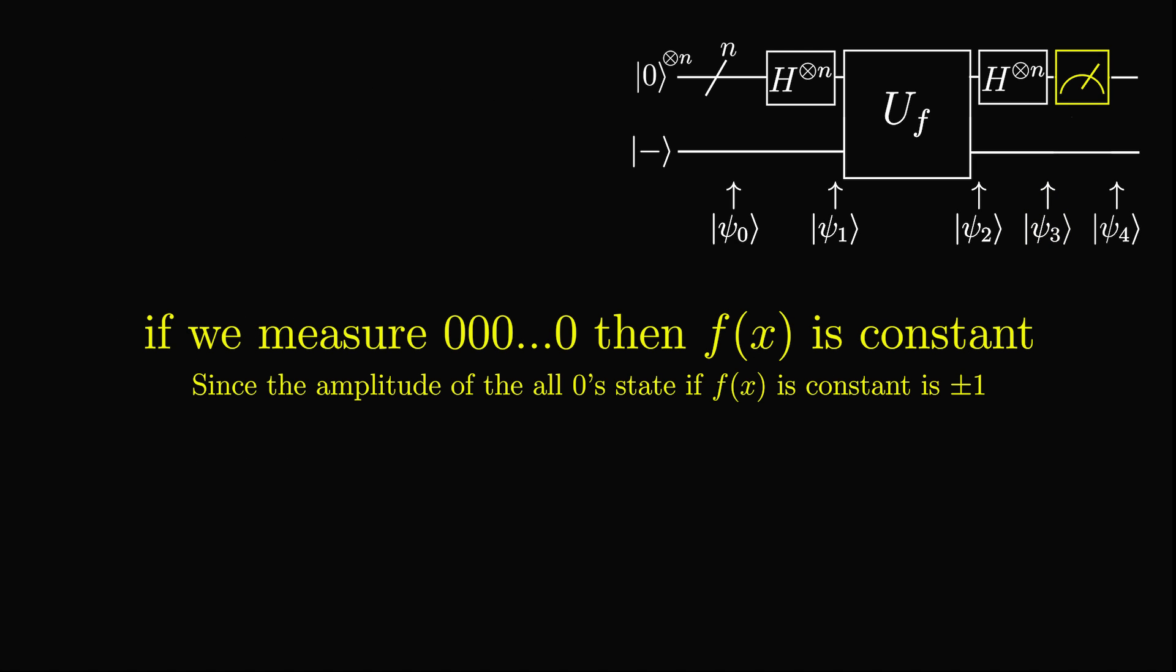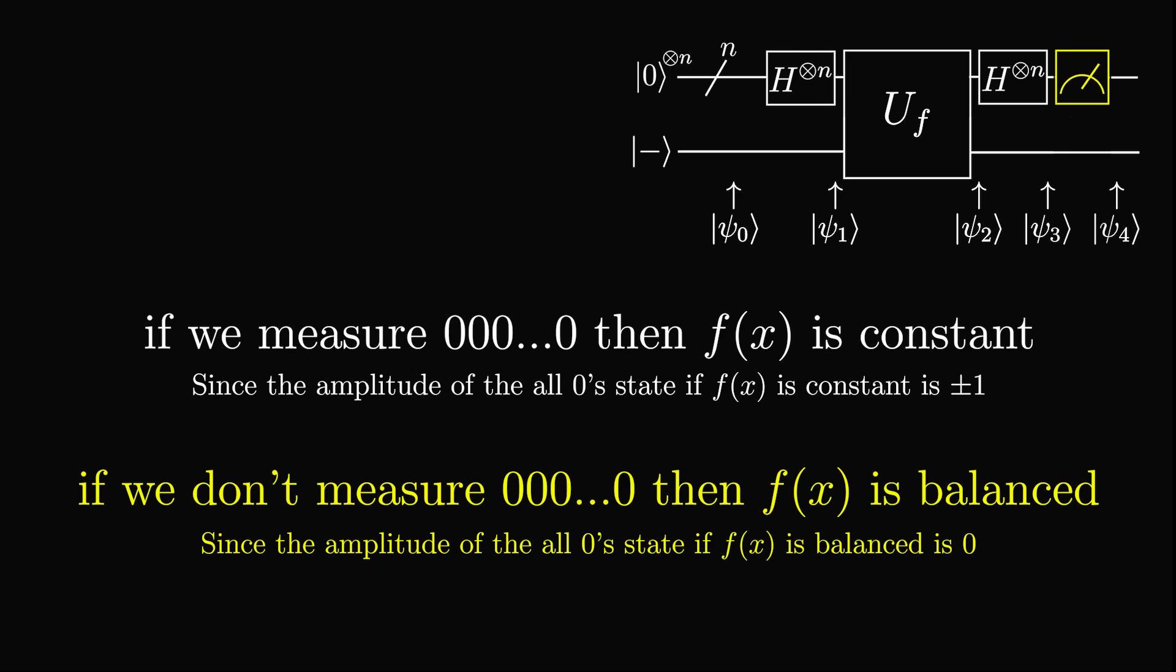Therefore, if we measure all zeros, then the function is constant, but if we measure at least one 1, then the function is balanced. And we are done! We have found out if f is constant or balanced in one query of the function. This is an exponential speedup over classical computers. From here, I would recommend learning the Bernstein-Vazirani algorithm, as it uses the same process of applying a wall of Hadamards, then querying the oracle, and once again applying a wall of Hadamards, but this time to find a secret bitstring.